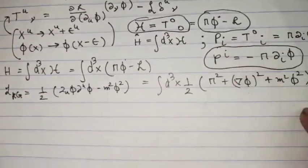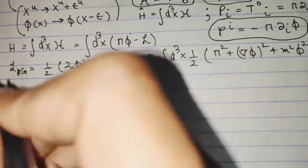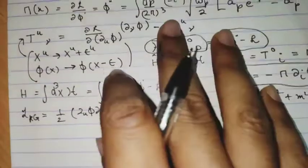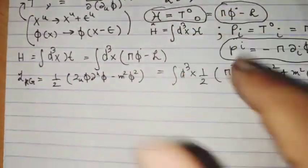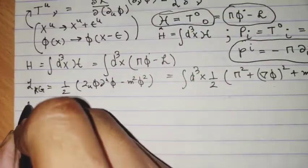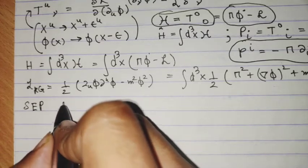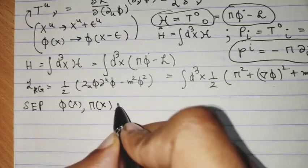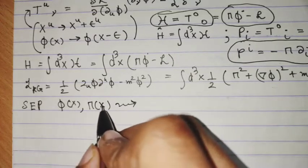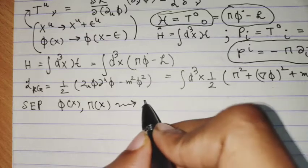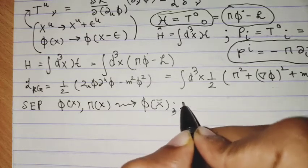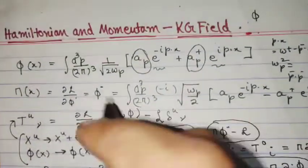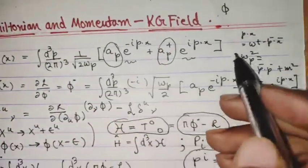It is a very tedious task, but we will try to do it once so that it is familiarizing to work with these operators a_p and a_p†. We will be working in the Schrödinger picture, which means that the operators φ(x) and π(x) will not depend on time — we will evaluate them at a fixed particular time t = 0. So we have φ(x⃗) and π(x⃗), and we just set t = 0 in these mode expansions.